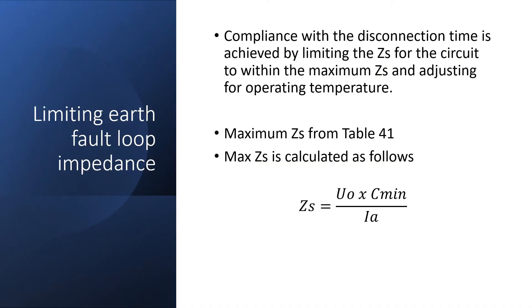To comply with the disconnection time we need to limit the impedance of the circuit to within the maximum ZS from table 41 in BS 7671. The maximum ZS is calculated as follows: ZS is equal to UO multiplied by Cmin divided by IA.